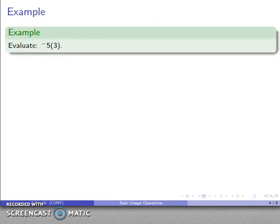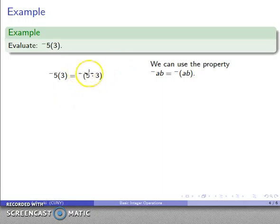For example, -5(3). Using the property -ab = -(ab), I can remove that negative to the outside: -(5·3). The parentheses say do me first, so 5 times 3 is 15, giving us -(15). There's nothing more to do inside the parentheses, so we get -15.